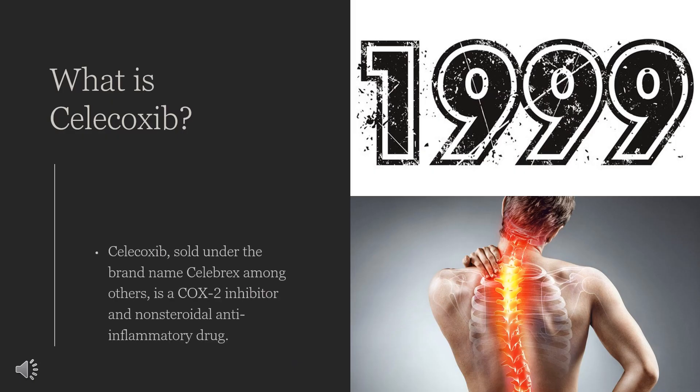Celecoxib, sold under the brand name Celebrex among others, is a COX-2 inhibitor and non-steroidal anti-inflammatory drug. It is used to treat the pain and inflammation in osteoarthritis, acute pain in adults, rheumatoid arthritis, ankylosing spondylitis, painful menstruation, and juvenile rheumatoid arthritis. Celecoxib was patented in 1993 and came into medical use in 1999. It is available as a generic medication.